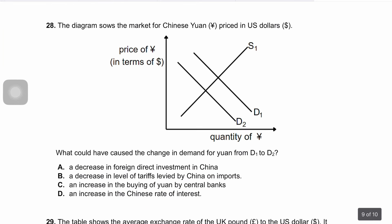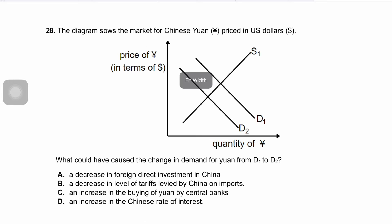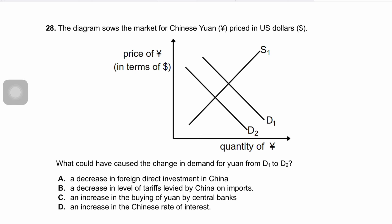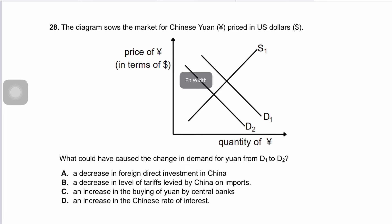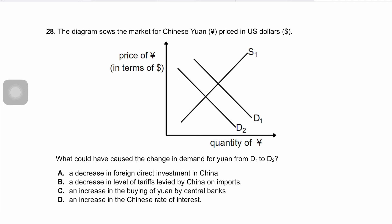Question twenty-eight: the diagram shows the market for Chinese yuan priced in US dollars, with the demand for yuan shifting from D1 to D2. A decrease in foreign direct investment in China would lead to less demand for yuan, because foreign investors would need fewer yuan to invest in Chinese assets. This causes the demand curve to shift from D1 to D2. The correct answer is A.